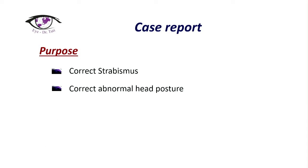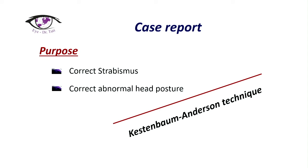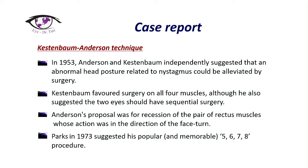Our purpose was to correct strabismus and to correct abnormal head deviation. For that, we decided to perform the Kastenbaum-Anderson procedure. What is this technique? In 1953, Anderson and Kastenbaum independently suggested that abnormal head deviation related to nystagmus could be treated surgically. Kastenbaum offered surgery on all four horizontal muscles, and later Anderson proposed recession of the pair of rectus muscles. In 1973, Parks suggested his classic numbering of the procedure: 5-6-7-8.